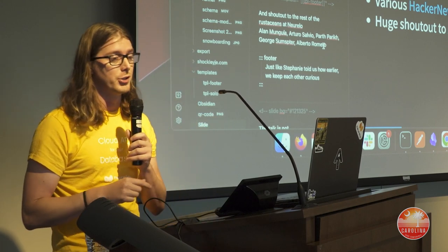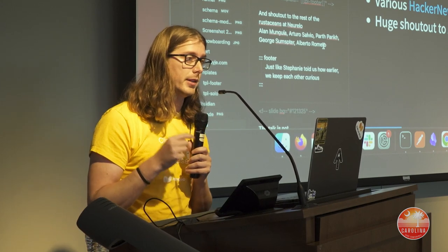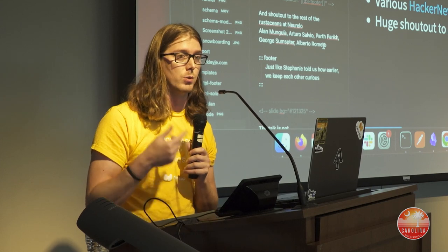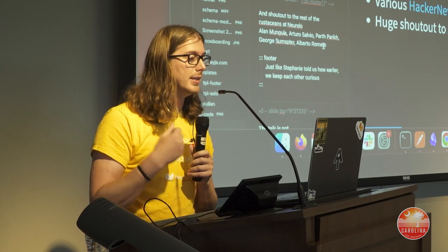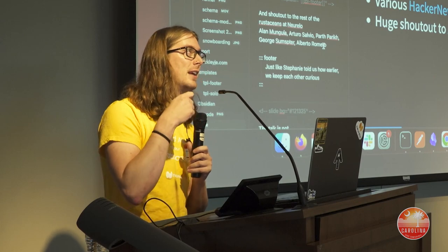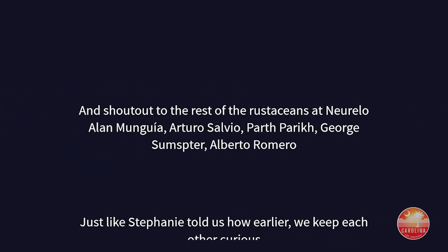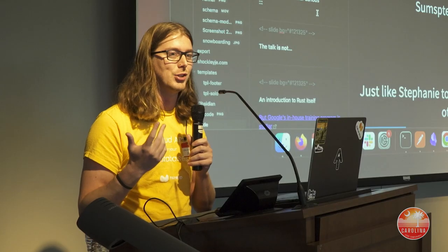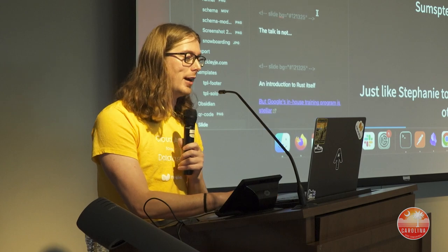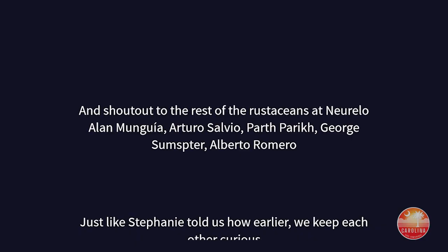A lot of Hacker News content informed this as well, and a huge shout-out to the Autometrics project. Autometrics isn't Rust-specific — their library extends to TypeScript and Python too — but I had some specific requests I wanted to incorporate in today's demonstration, and they were able to support it. Big props for integrating with OpenTelemetry and Prometheus. Shout-out also to the rest of our team — we all have to encourage curiosity, and I want to give credit to the other Rust contributors on our team.